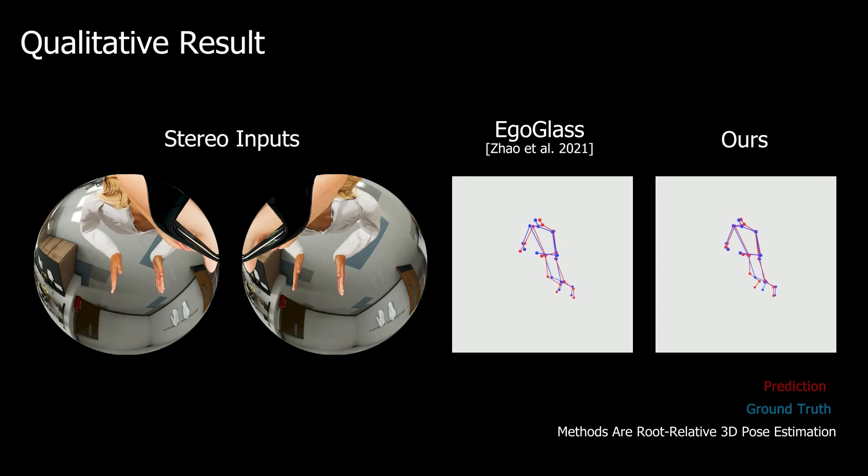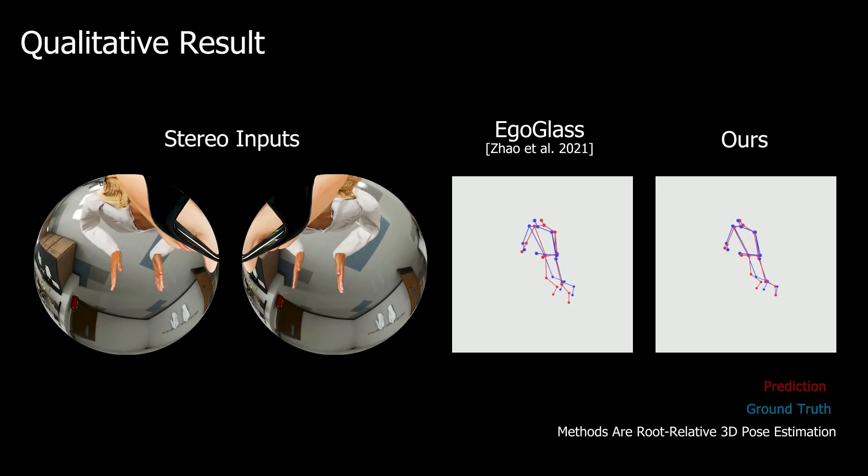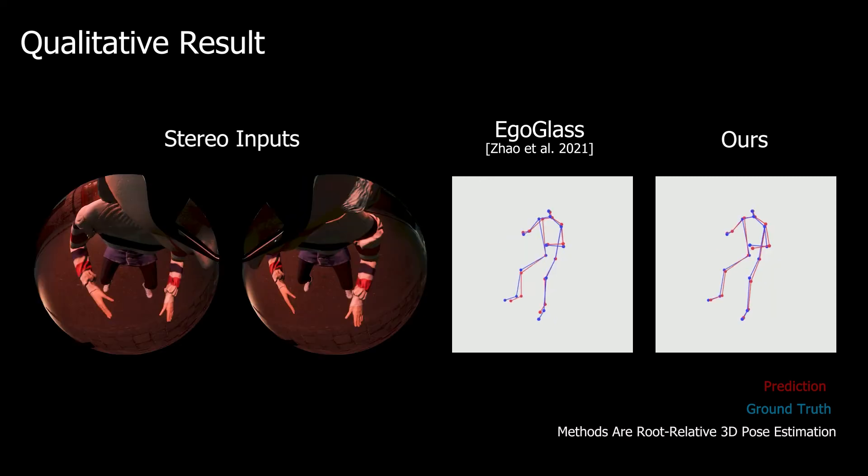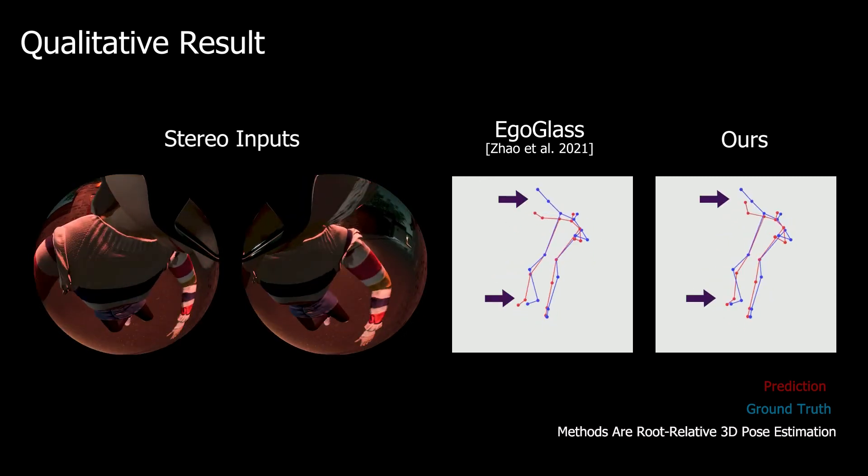We show the qualitative results. Compared to the existing method, our approach consistently generates accurate 3D poses, even when the lower body part is out of image range. In some complex motions in a brighter environment, our method still accurately predicts 3D poses. Overall, our method has better visual output than the existing method.